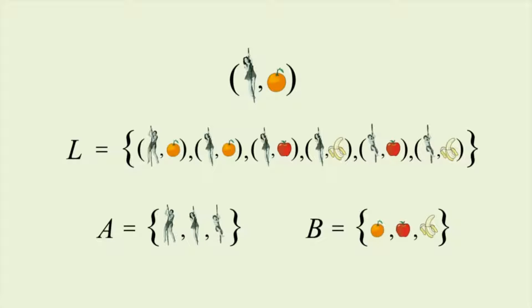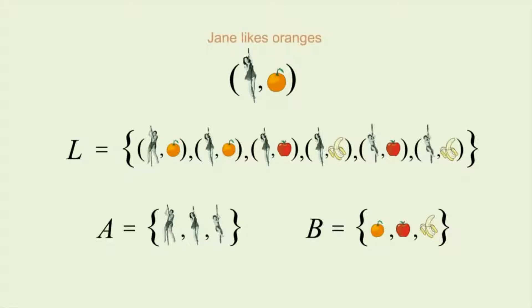Each ordered pair that's a member of set L makes a statement about how one person in set A is related to one fruit in set B. A mathematician would say that this ordered pair makes the statement: Jane is L-related to oranges, or in plain English, Jane likes oranges.